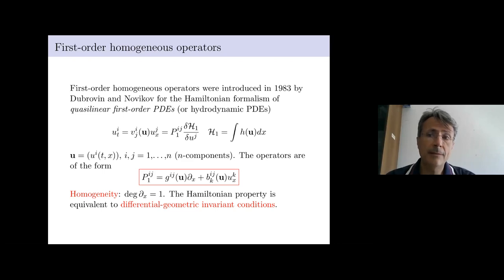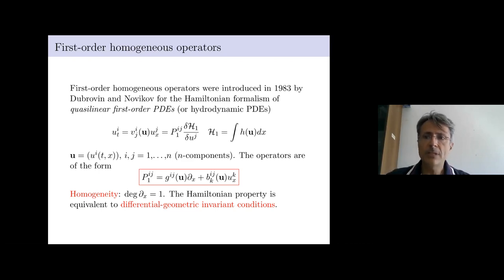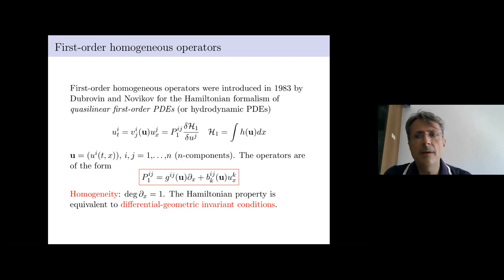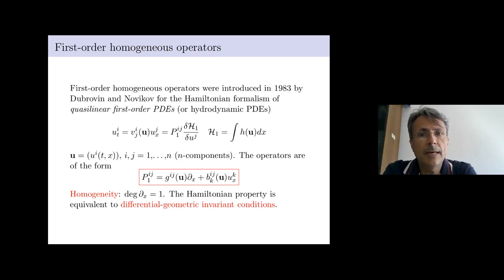The WDVV equations are of quite high mathematical importance due to the work of Boris Anatolius Dubrovin in the 90s. I would like first to introduce them as Dubrovin did in his seminal paper 'Geometry of Two-Dimensional Quantum Field Theory / Topological Field Theory.' The aspects on which I will focus more are related to the bi-Hamiltonian formalism of the WDVV equations. I will introduce a class of Hamiltonian operators for PDEs introduced by Dubrovin and Novikov in 1983.